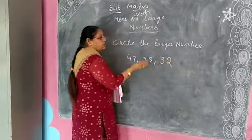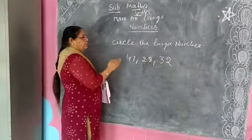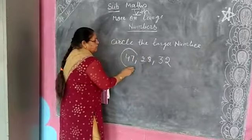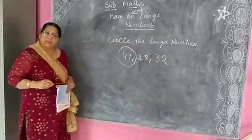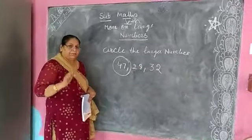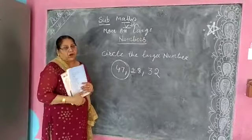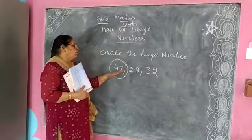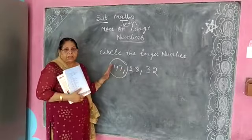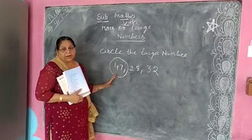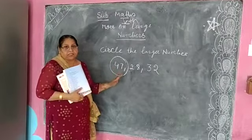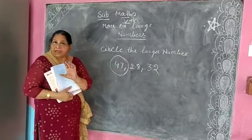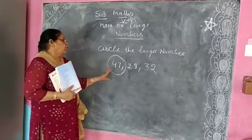Which number is larger here? Obviously, 28, 32, 47 — so the large number is 47. If you are in 5th class, you will see the larger number according to 5th class level. A number like 1,000 or 10,000 is given and then you will find the larger number — not the largest, the larger number. Go circle the larger number.